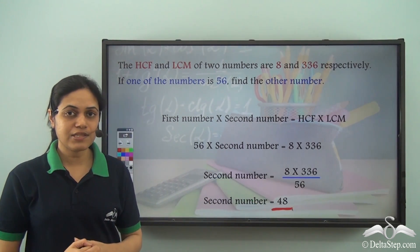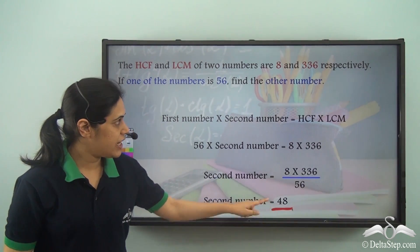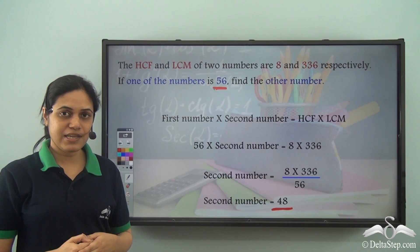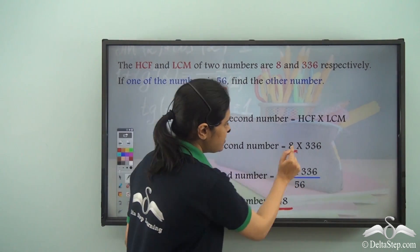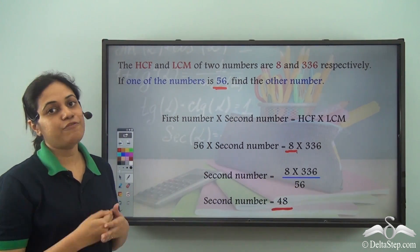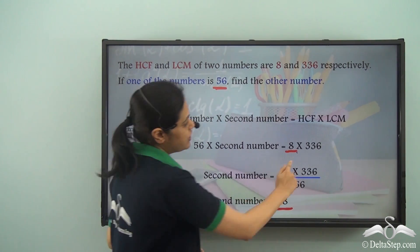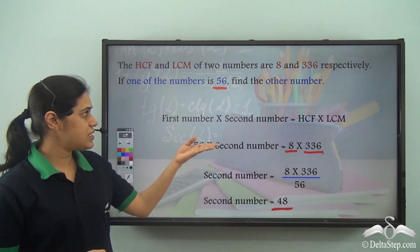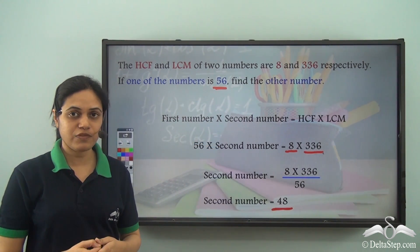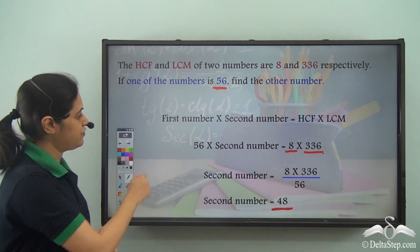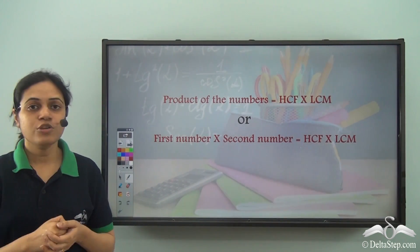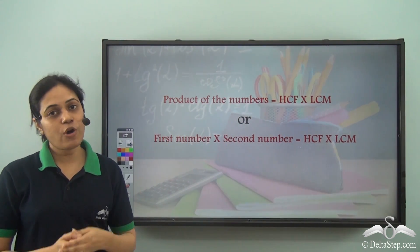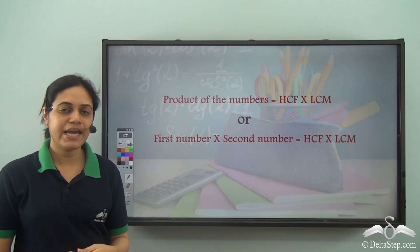Now, how can you verify your answer? Take 48 and the other number 56. Find their HCF — you will see that their HCF is 8. And if you find their LCM, you will see that their LCM is 336. So, this is how you can solve problems of this type using this relation. The relation is: product of the numbers is equal to the product of HCF and LCM.